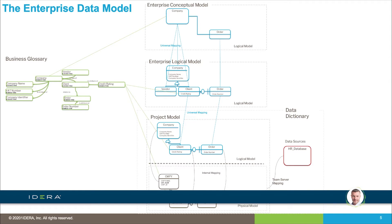One of the base uses of the enterprise data model — the conceptual and logical parts — is as a mechanism to understand, manage, and govern the data assets of the organization. Traditionally, the enterprise data model held all the rules around information for governance. Nowadays we also have the business glossary, generally owned by the data governance organization, which manages the organization's understanding of information with business terms, relationships, standard definitions, and rules.